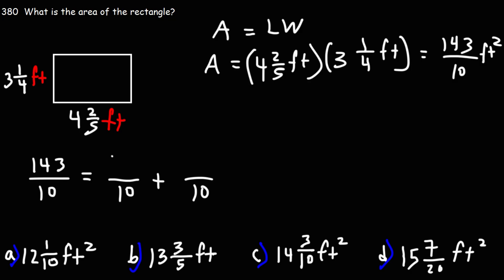It's going to be 140. 143 minus 140 is 3. So we can break up this fraction into those two parts. Now what's 140 divided by 10? If we cancel a zero, it becomes 14 divided by 1, which is 14.